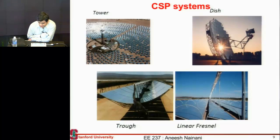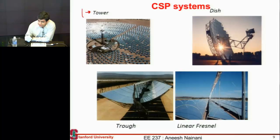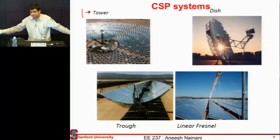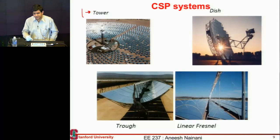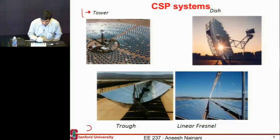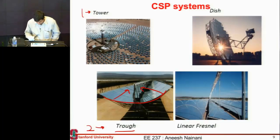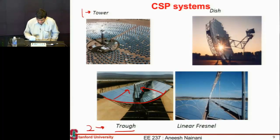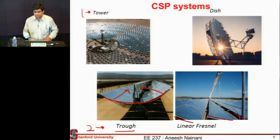You can classify the CSP system, or the solar thermal systems, into primarily three types. You have these towers, which are mirrors all projecting the light onto one central tower. The other ones are these troughs — parabolic dishes — concentrating the light to a pipe running at the focal point of the parabolic mirror. And a version of that same trough is instead of having a big mirror, you can break it down into small mirrors and make a Fresnel system.